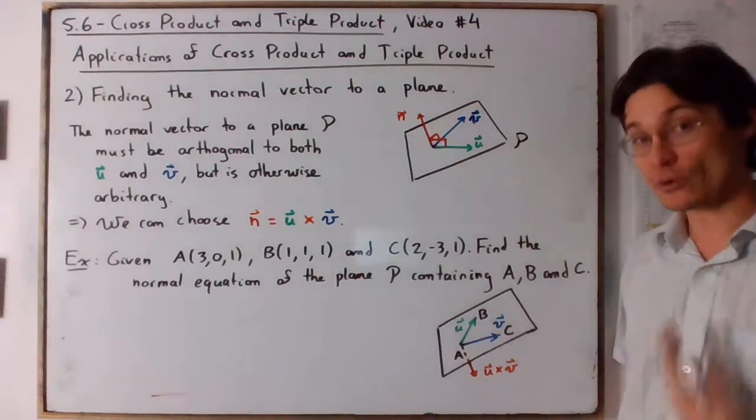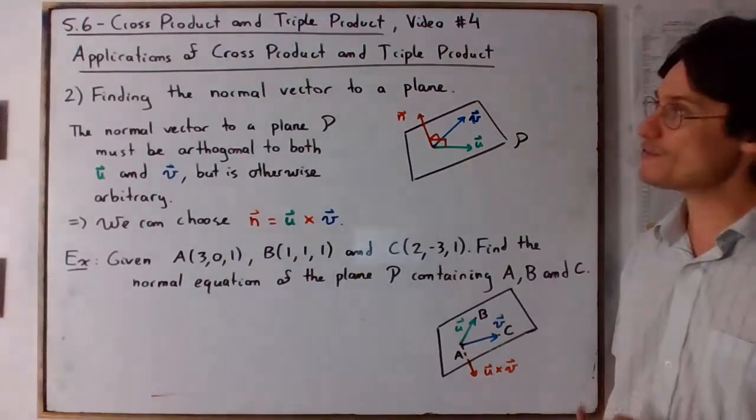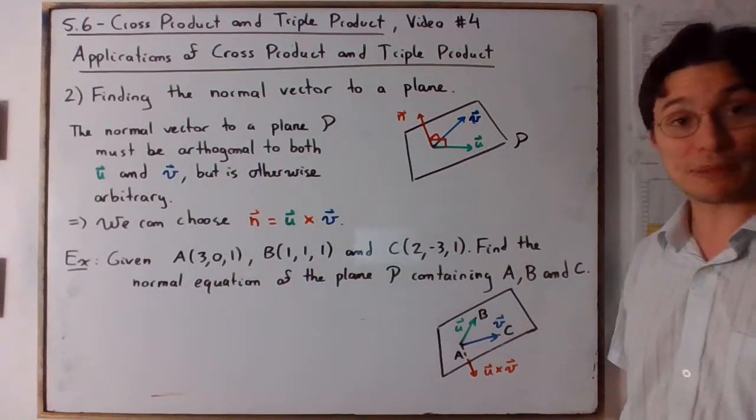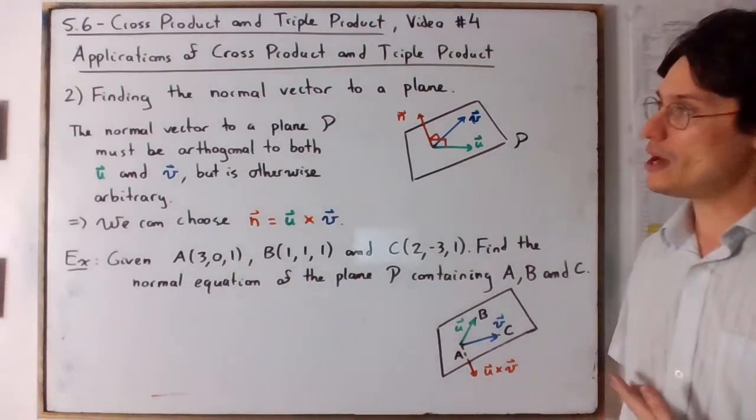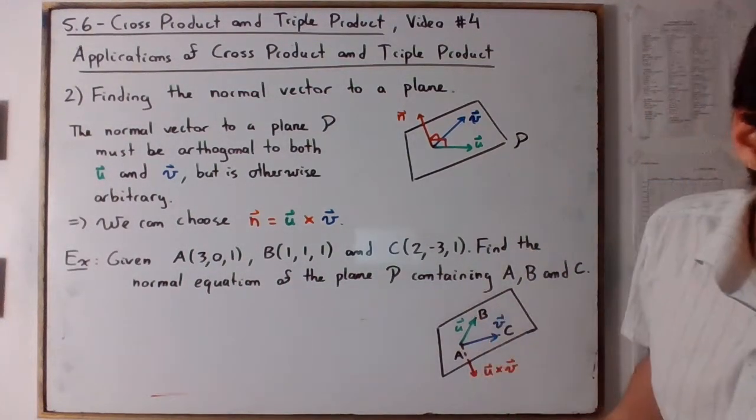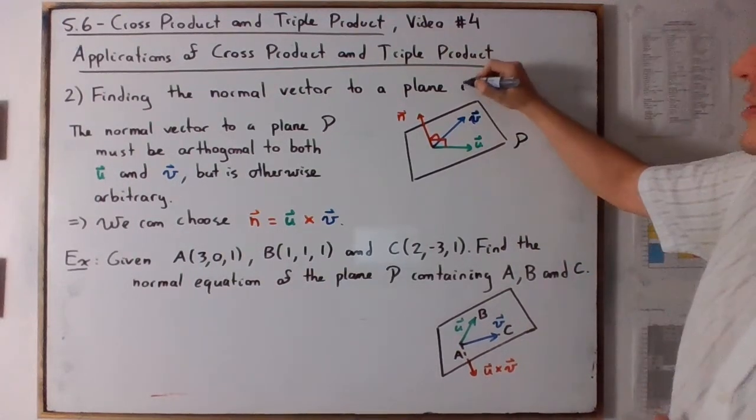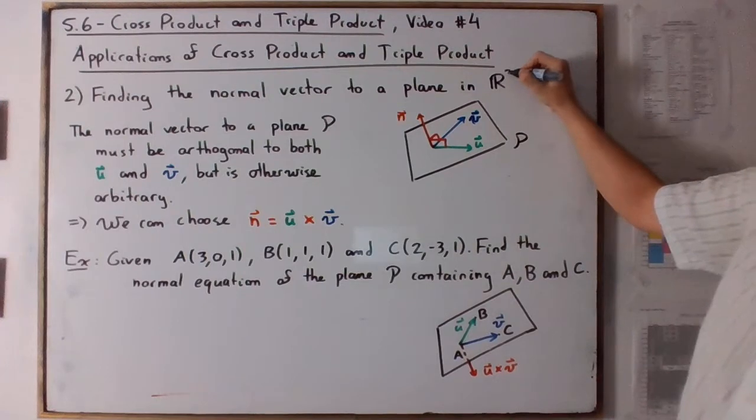second application of the cross product, more particularly the cross product here, is to find the normal vector to a plane. So this is good only in R³ by the way, so let's actually write this down. So in R³.